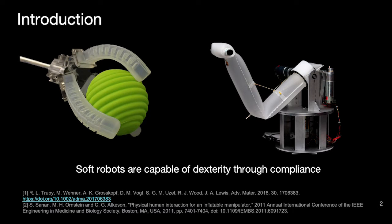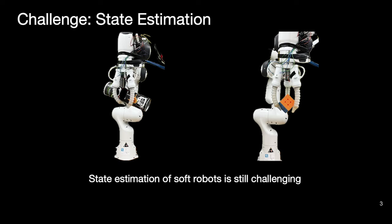Soft robots offer an exciting potential due to their compliance and adaptability, making them safer and more versatile for practical tasks. However, accurately perceiving their own shape and state, known as proprioception, remains a challenge in this field.